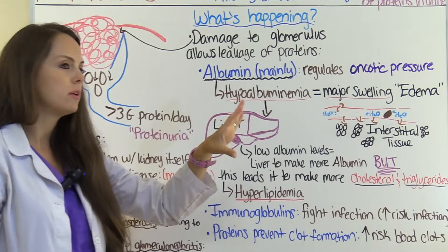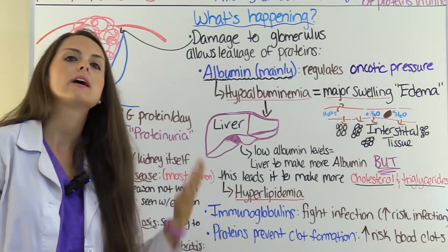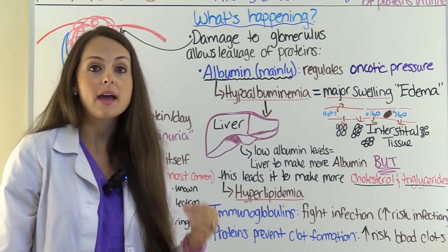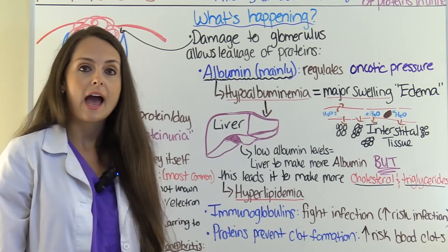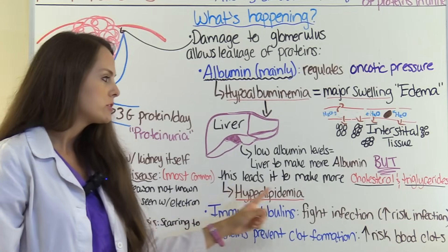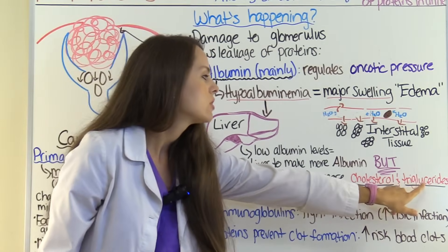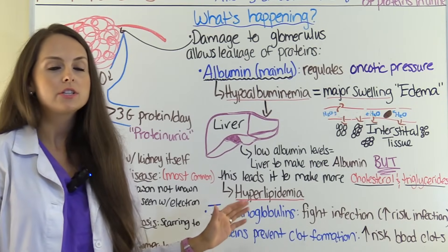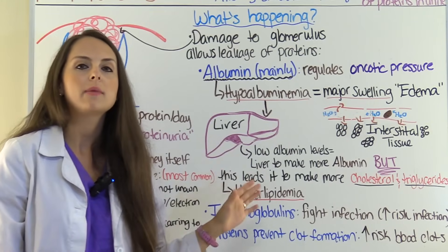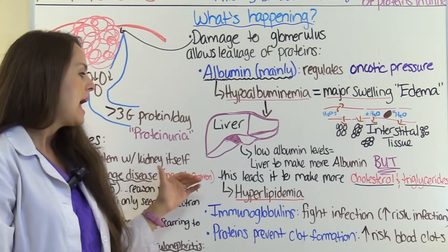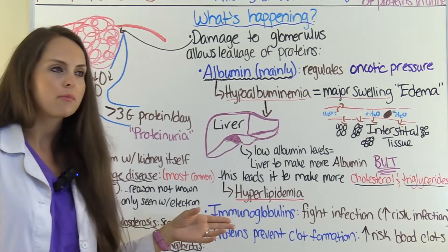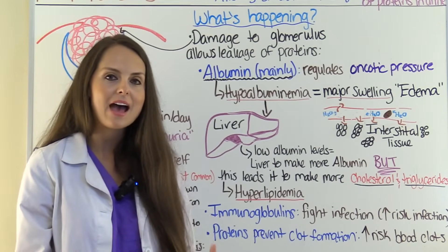Low albumin levels also cause problems with cholesterol and triglyceride levels. In response to low albumin, the liver tries to make more albumin, but in the process it also produces more cholesterol and triglycerides. So in severe cases, lab work will show hyperlipidemia. This condition — nephrotic syndrome — is especially relevant for pediatric patients on the NCLEX, typically ages two to five. When you see high cholesterol in a young child, it raises a red flag because children that age should not have high cholesterol levels.